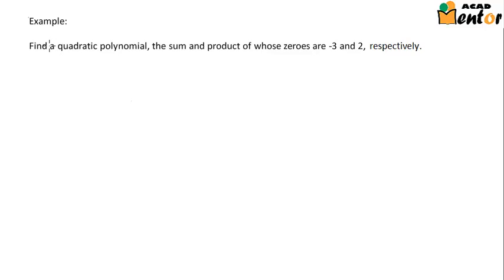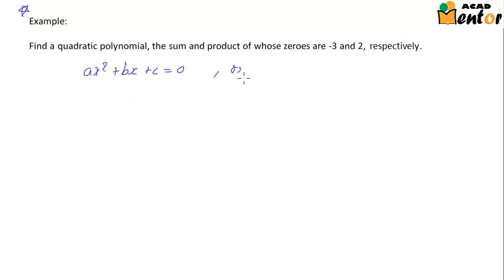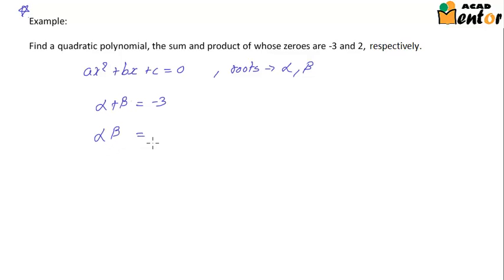Let's look at another example. The problem says: find a quadratic polynomial the sum and product of whose zeros are -3 and 2 respectively. This is an important problem from an examination point of view. Let's suppose the quadratic polynomial is of the form ax² + bx + c = 0, with roots alpha and beta. We know the sum alpha + beta = -3 and the product alpha × beta = 2.